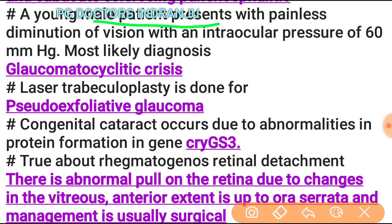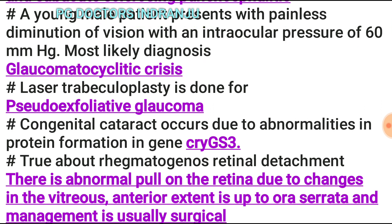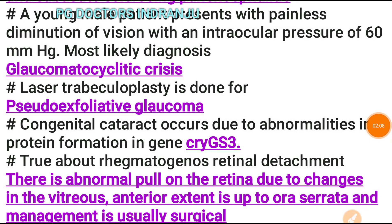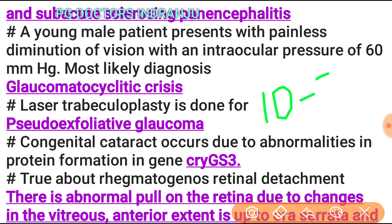A young male patient presents with painless diminution of vision with intraocular pressure of 60 mmHg — the most likely diagnosis is glaucomatocyclitic crisis. The normal intraocular pressure is 10 to 21 mmHg.